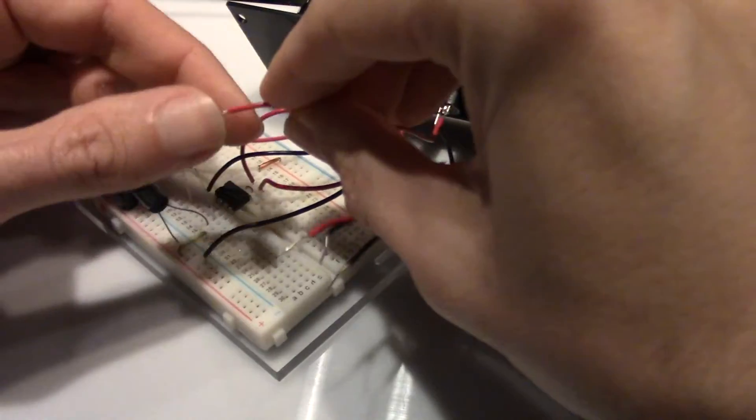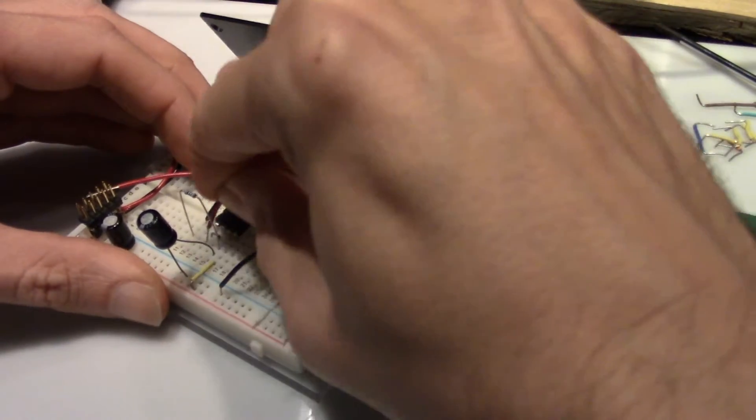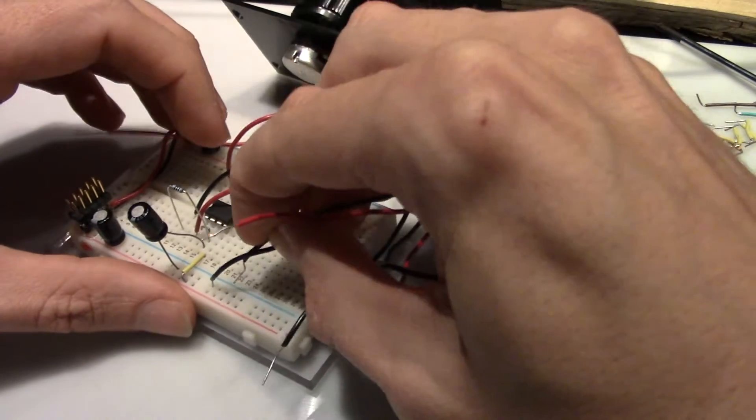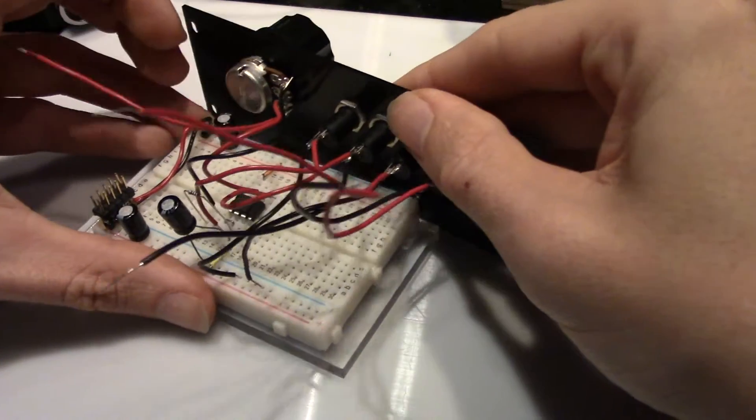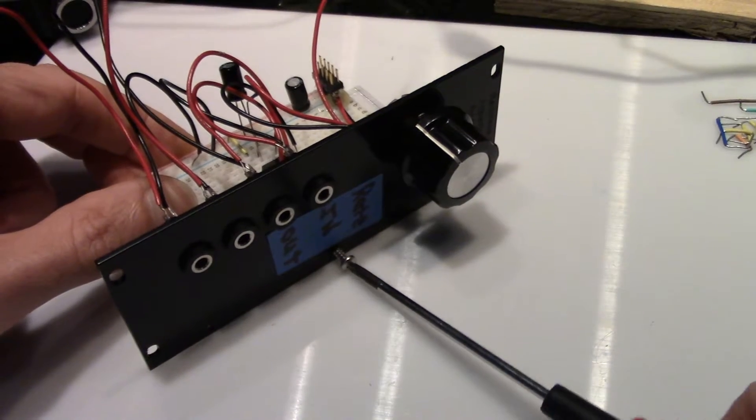Finally, connect the red wire from the second jack to pin 1 and the black wire to ground. Now reattach the front plate with the three screws.